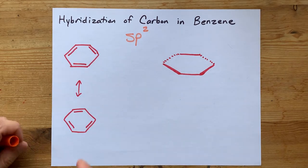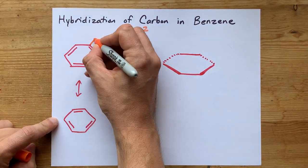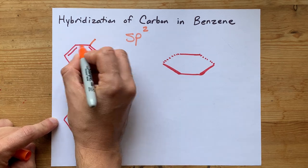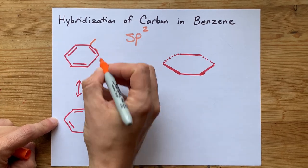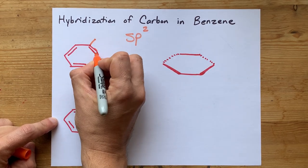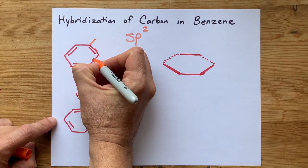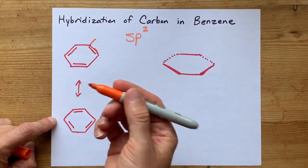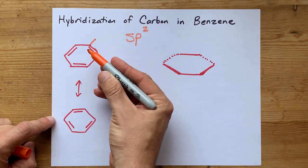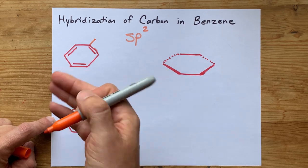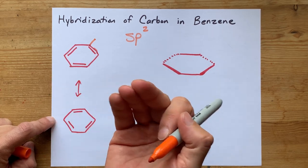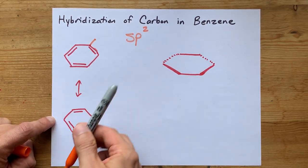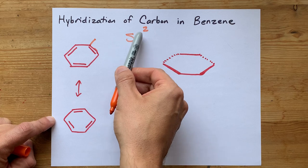The point is that in both of these representations, you've got a carbon with three sigma bonds and a pi bond. The fact that there is a pi bond connected to each of the carbons means that there's one unhybridized p orbital, and that's why this is sp2.